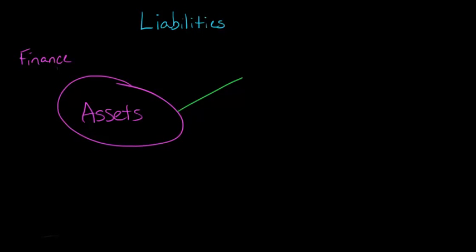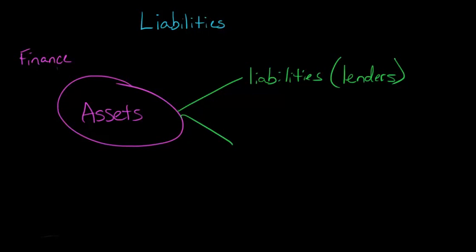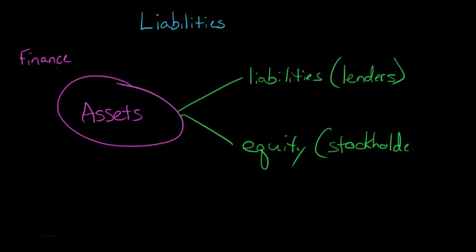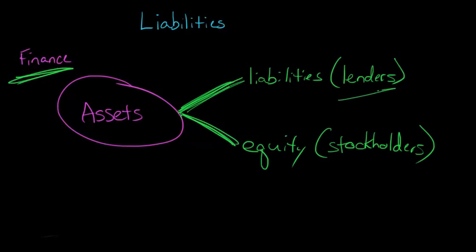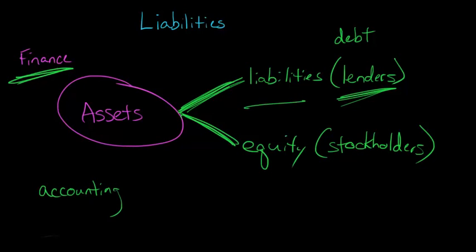There are claims against those assets. When you think about liabilities, a finance person might think these are claims by lenders. And then we can think about claims by equity — like stockholders or owners of the firm. Owners and stockholders have claims against assets, and lenders have claims against assets. In finance, we're mainly thinking about lenders and debt. But of course there are other claims than that, and when we get into accounting, we'll have a much more specific definition of what is meant by the word liability.